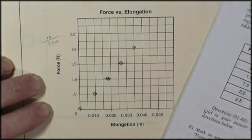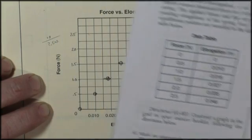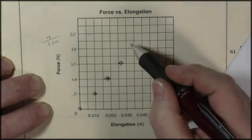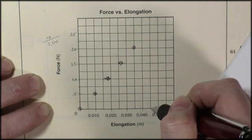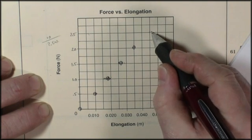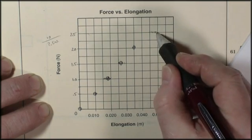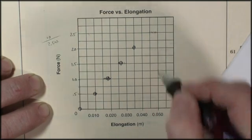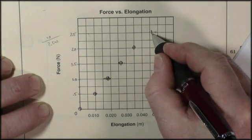And finally, the last data point is 2.5 newtons and 0.046. So 2.5 and 0.045, and then 6, 7, 8, 9. I'm just kind of ballparking it there. But 0.046 would be just a hair off this line here.